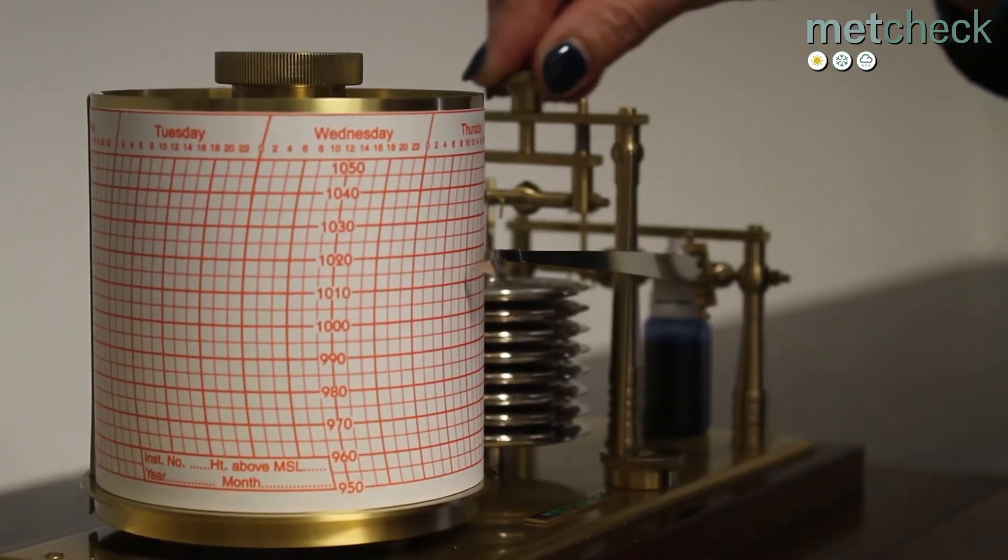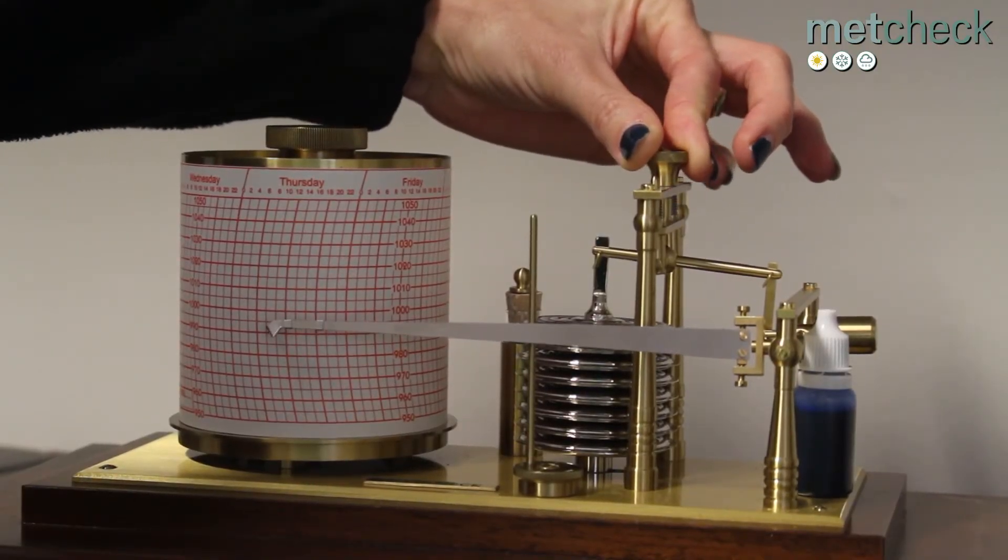Using the small adjustment cap to move the barograph arm up and down, find the correct pressure.